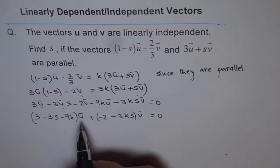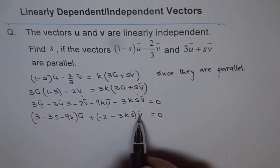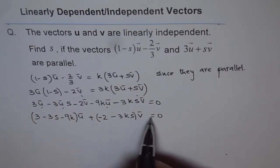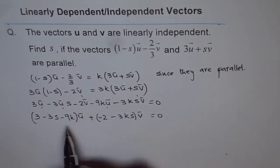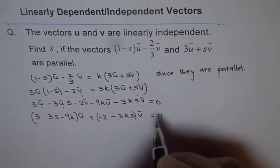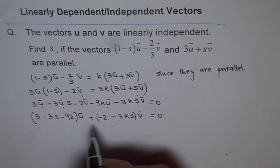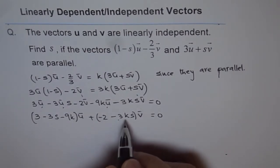Now, we know u and v are non-zero vectors. And u and v are linearly independent. That means, this is equal to 0 only if both are 0. Now, since u and v are independent, this is 0 when both are 0. That's important.